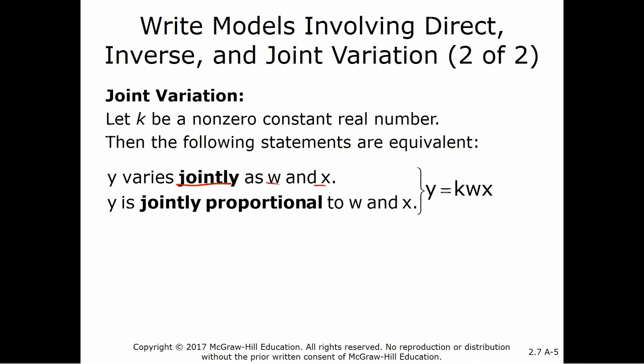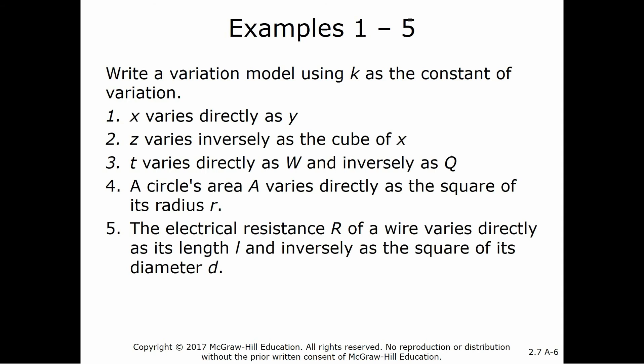So, knowing these two things, that direct variation means we're multiplying times k and the inverse means that we're taking k and dividing it by x, then we can look at how to solve variation models. What I want to start with is I want to actually just write out the variation model using k as a constant of variation.